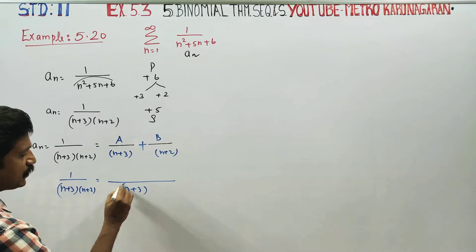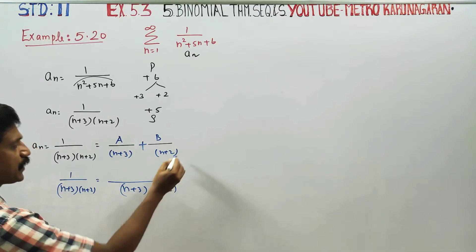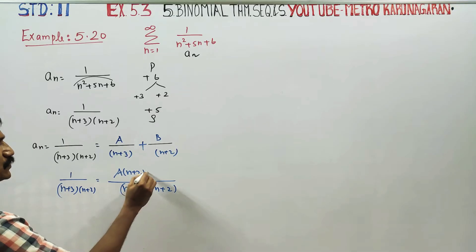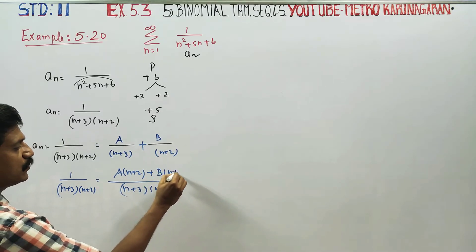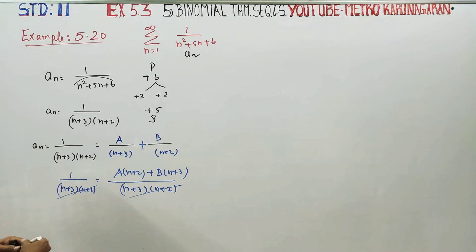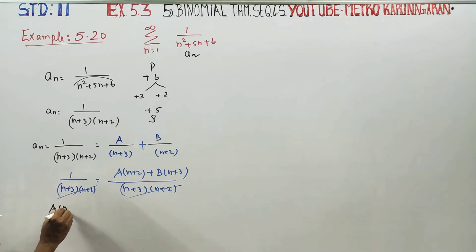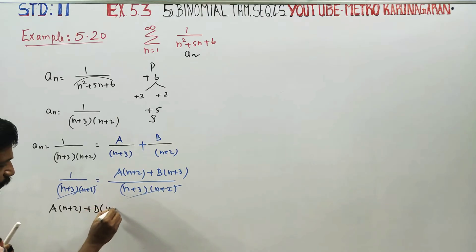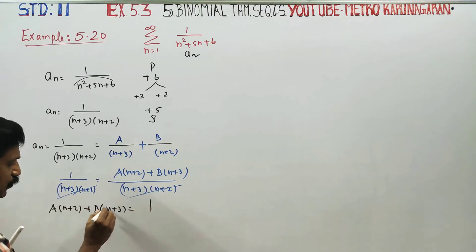The LCM is (n+3)(n+2). Cross multiplying, we get a into (n+2) plus b into (n+3). So a(n+2) plus b(n+3) is equal to 1.